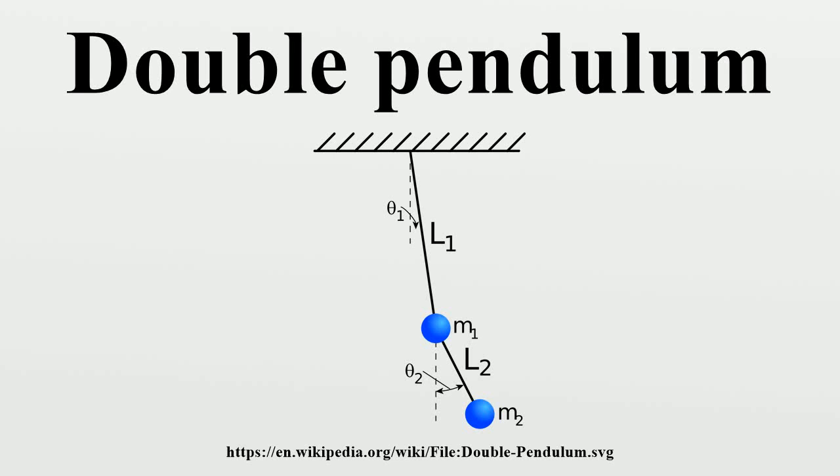In physics and mathematics, in the area of dynamical systems, a double pendulum is a pendulum with another pendulum attached to its end, and is a simple physical system that exhibits rich dynamic behavior with a strong sensitivity to initial conditions.